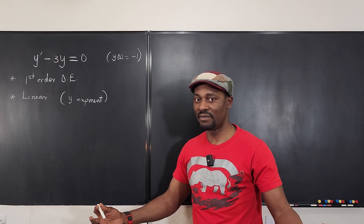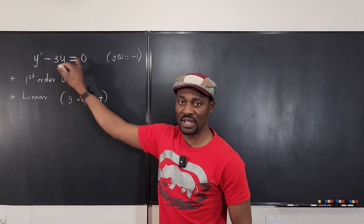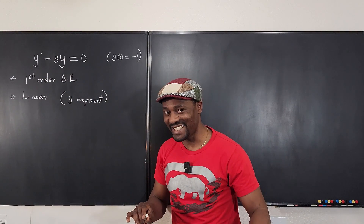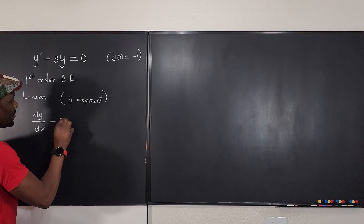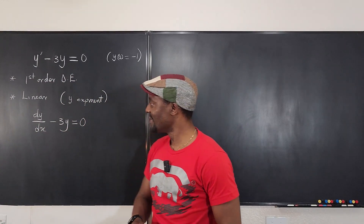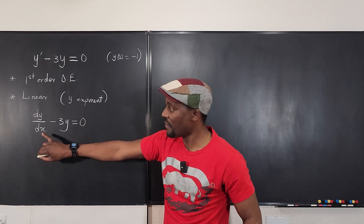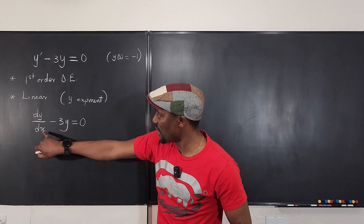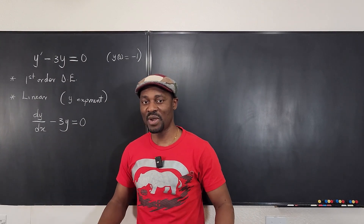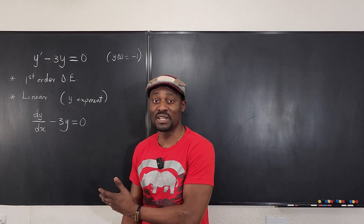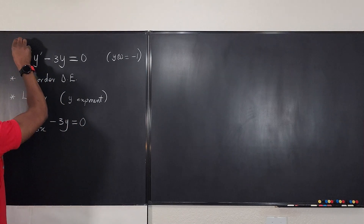How many variables do we have? We can't tell until we rewrite the expression. You have to rewrite Y prime as dy/dx. So we rewrite the problem as dy/dx minus 3y equals 0. Now we have Y and X. Since there is only one independent variable, we take derivatives with respect to only one variable, so this is an ordinary differential equation.